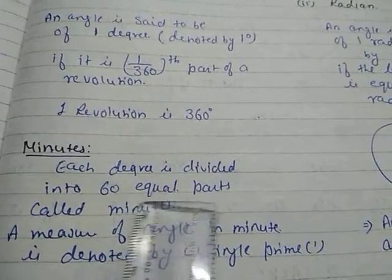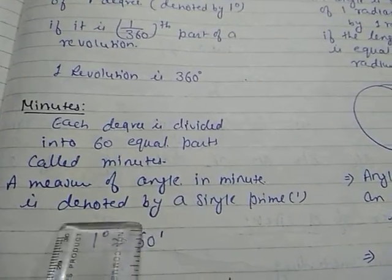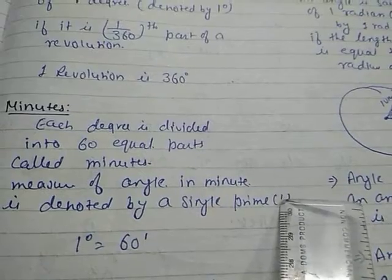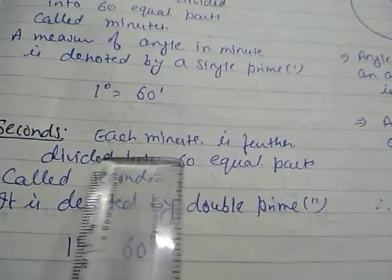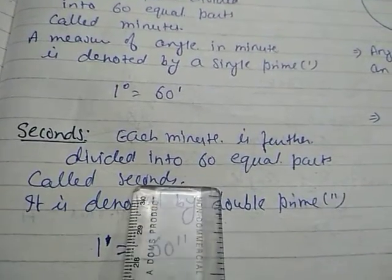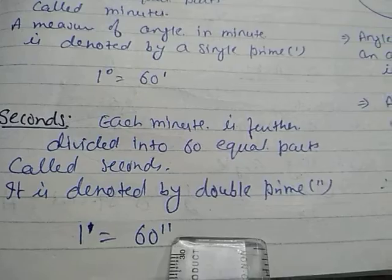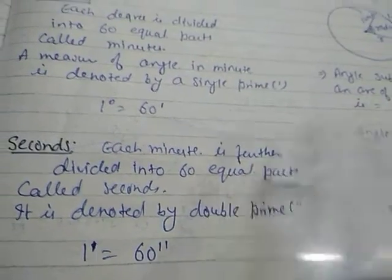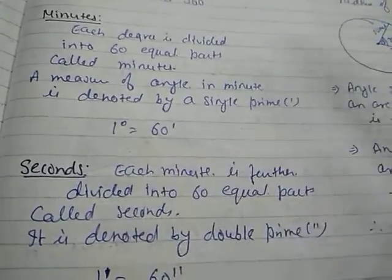After degree, then minute: each degree is divided into sixty equal parts called minutes. A measure of angle in minutes is denoted by a single prime. So 1° = 60 minutes. Then seconds: each minute is further divided into sixty equal parts called seconds, denoted by double prime. So 1 minute = 60 seconds. The complete measurement is degrees, minutes, and then seconds.